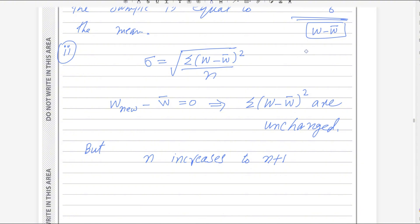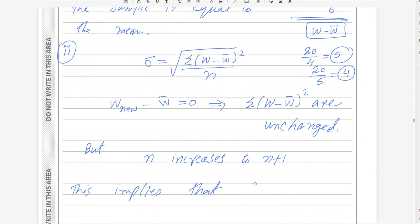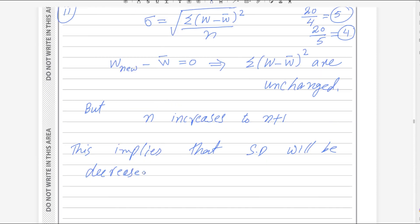For example, 20 divided by 4 gives 5, but 20 divided by 5 gives 4 — a smaller value. So with the same numerator and a denominator increased by 1, the standard deviation will be decreased. Hopefully you understand this part — it is a tricky one. If you have any doubts or questions, please write in the comments.